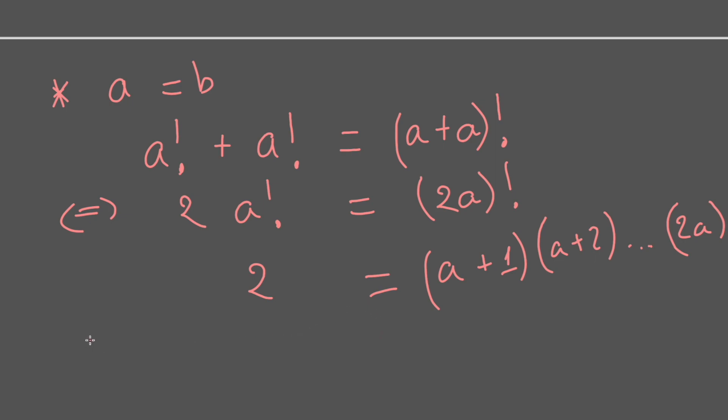So because a is a positive integer, it means a is always greater than or equal to 1. So then a and b equal 1 in this case.